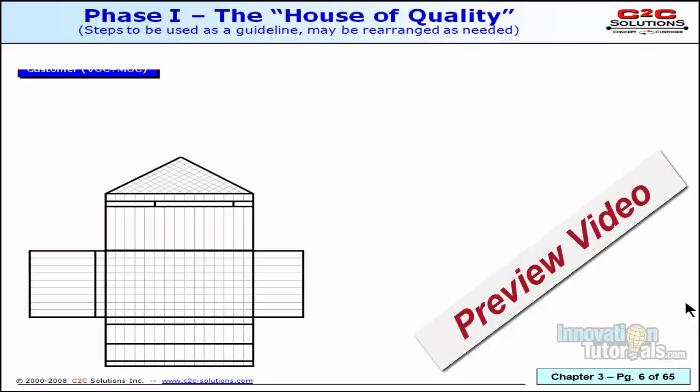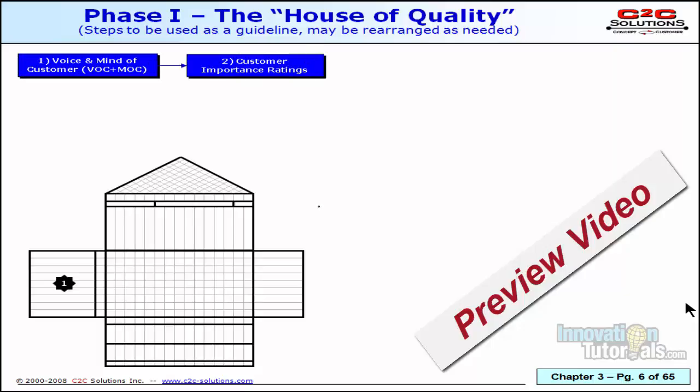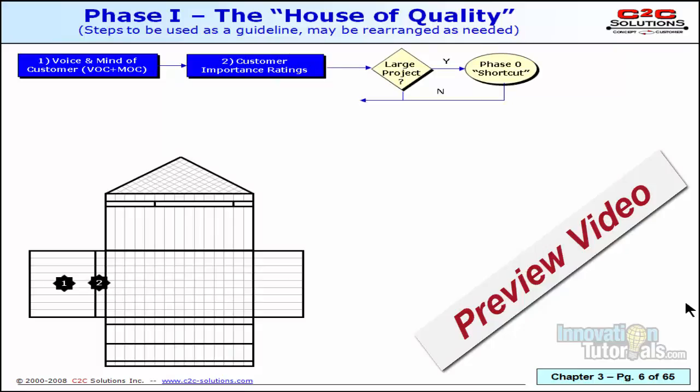The first step is the voice of the customer. The second thing you do is the importance rating. Now, depending on how large your project is, you might stop here and refocus. There's a shortcut we'll show you a little later in this webinar when you get a large list of requirements.